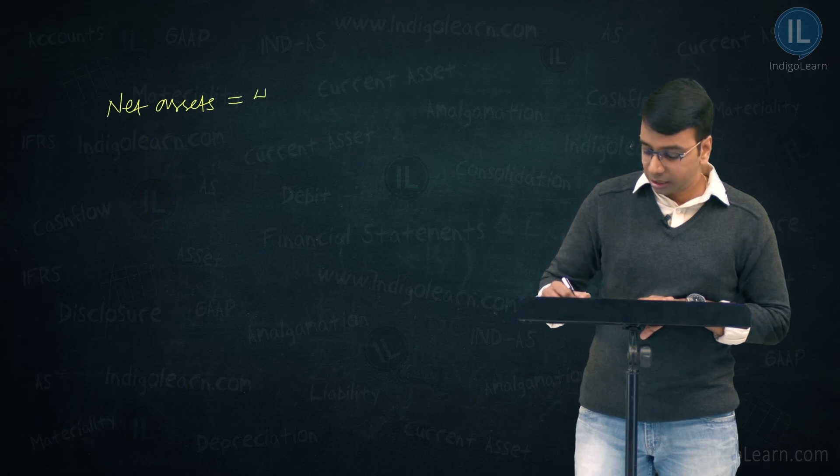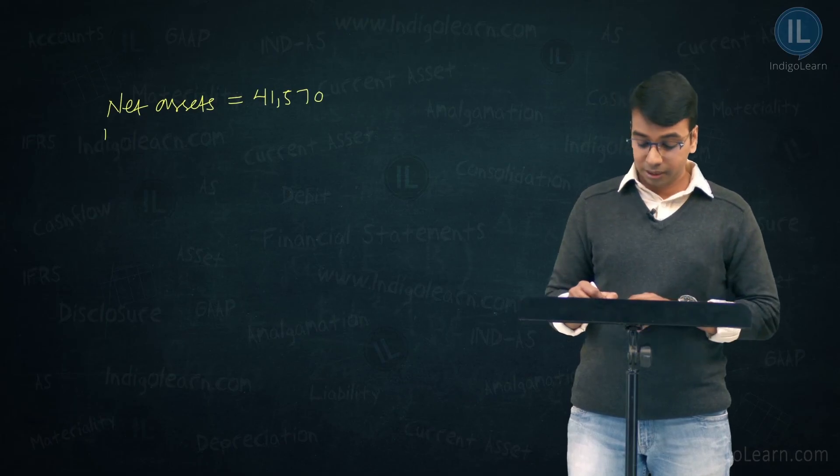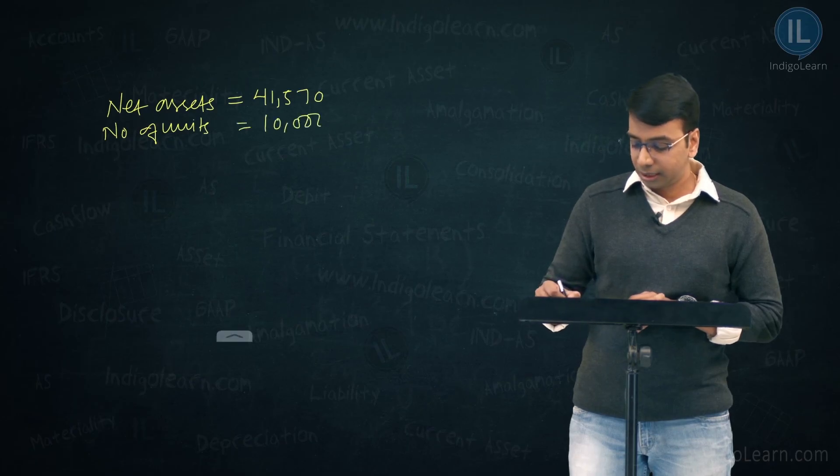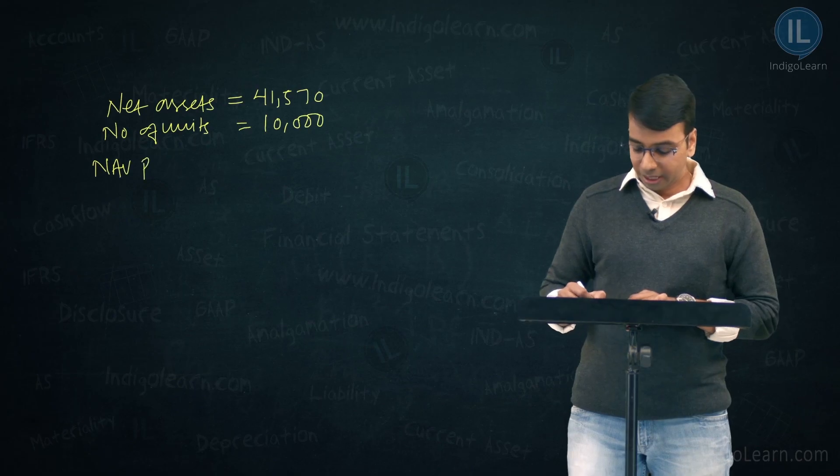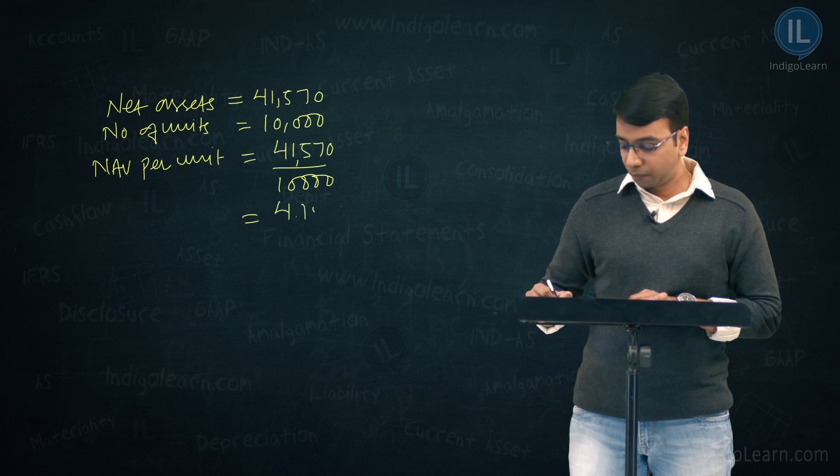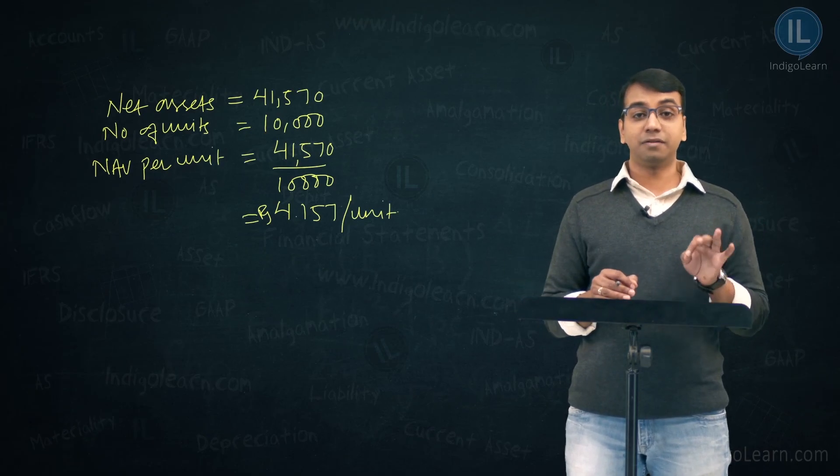Net assets of the fund is ₹41,570 and what are the number of units? Number of units of the fund are 10,000 given in the question. So what is the NAV per unit? ₹41,570 divided by 10,000. NAV per unit is equal to ₹41,570 divided by 10,000 which is ₹4.157 per unit. ₹4.157 per unit is the NAV of the mutual fund.